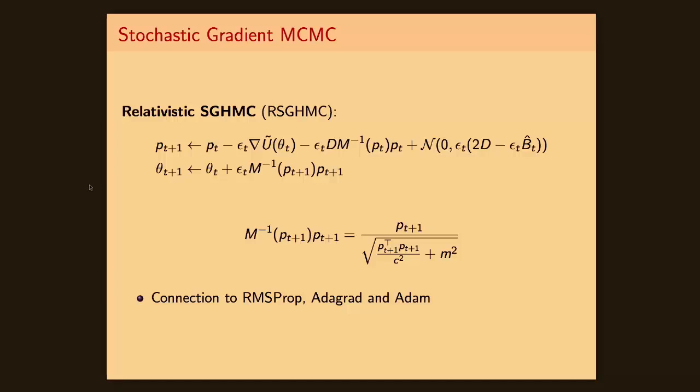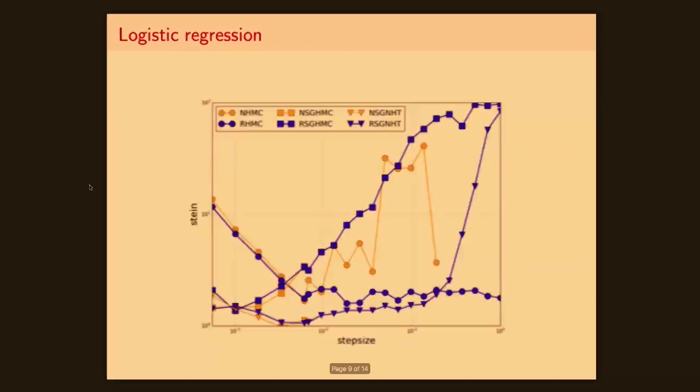This is reminiscent of what happens in popular deep learning optimizers, such as Adam, Adagrad, RMSprop, where the idea is trying to normalize gradients for each dimension individually, so as to better adapt to the local geometry of your distribution. So it is interesting how a set of algorithms that are derived from a fully Bayesian setting have actually these surprising connections to deep learning optimizers.